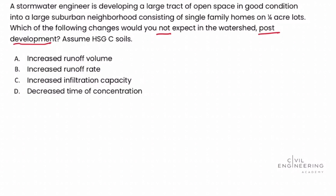Next we need to review HSG C soils. HSG refers to hydrologic soil group, and there are four types: A, B, C, and D. Turning to the PE Reference Handbook version 1.1, section 6.5.2.2, we're specifically looking for the NRCS curve number chart.